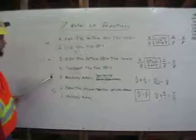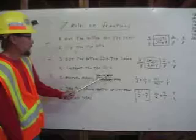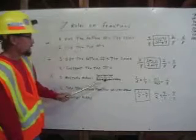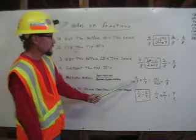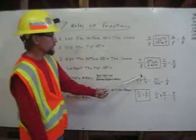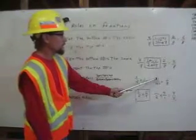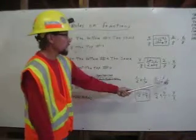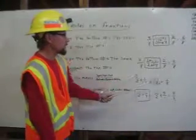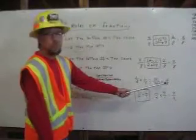Multiplication: multiply across, top by top and bottom by bottom. One-fourth times one-half times one-fourth — one times one equals one, two times four equals eight. One-half times one-fourth equals one-eighth.